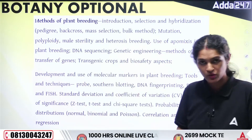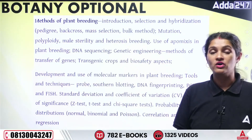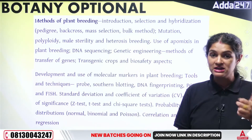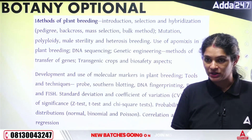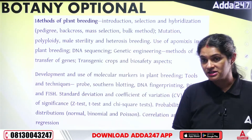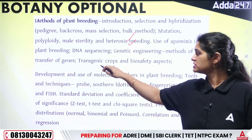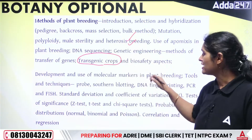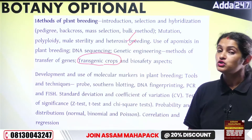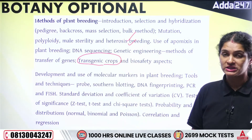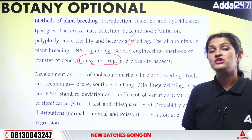Plant breeding topics: introduction, selection, hybridization, pedigree method, backcross, mass selection, bulk method, mutation breeding, polyploidy, male sterility, and heterosis breeding. Transgenic crops and biosafety aspects are also covered. Tools and techniques include probes, Southern blotting, DNA fingerprinting, PCR, and FISH.